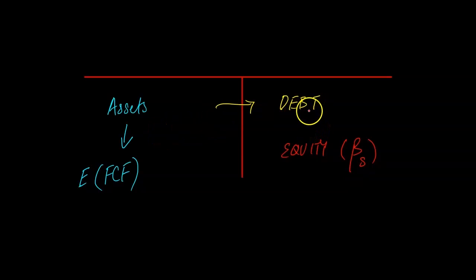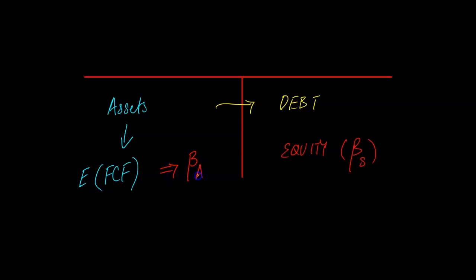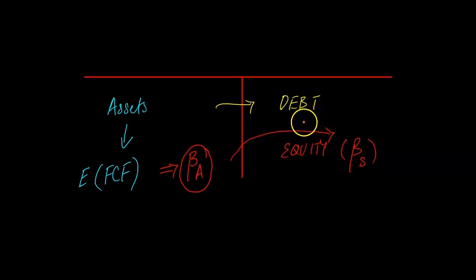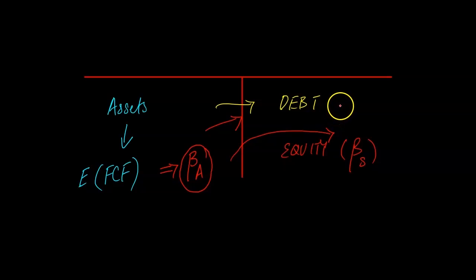For a moment, ignore debt. These assets are expected to produce some cash flows, and the riskiness of those cash flows is represented by the asset beta. If there were no debt, all the risk of the underlying cash flows would be borne by equity holders — which is why asset beta equals equity beta in that case. But if part of the assets are funded with debt, recall that debt is senior to equity. Whenever cash flows are produced, they go to debt holders first because they have a senior claim, which is why debt tends to be less risky than equity.